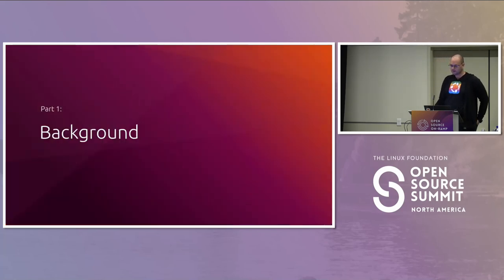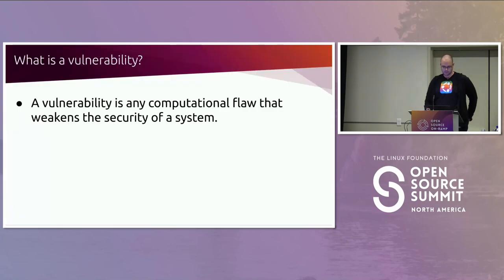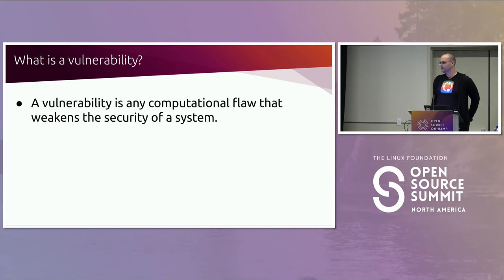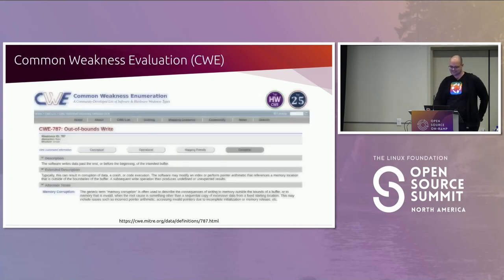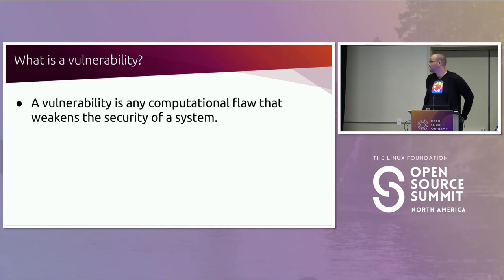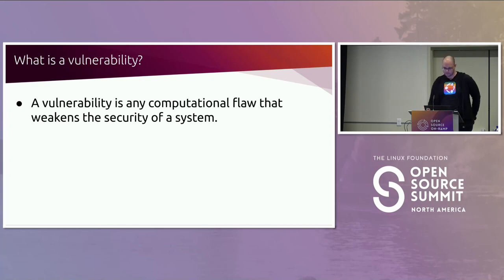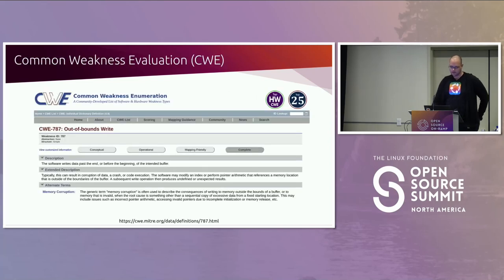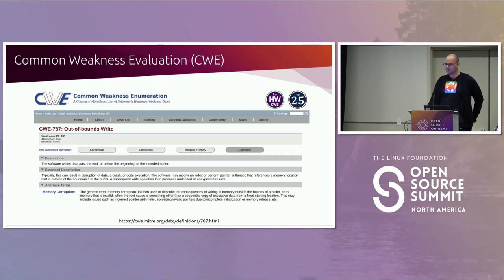First there are a few background terms we need to define to talk about security. A vulnerability is any computational flaw that weakens the security of a system. The important takeaway is not every bug is a vulnerability. There are many families of vulnerabilities, and Common Weakness Enumeration, or CWE, is a way to describe specific classes of vulnerabilities.